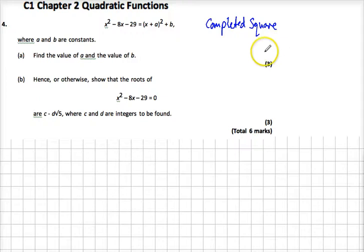That's completed square form, okay? And it says a and b, find the values of a and b. Okay, do what it says. So let's go forwards.